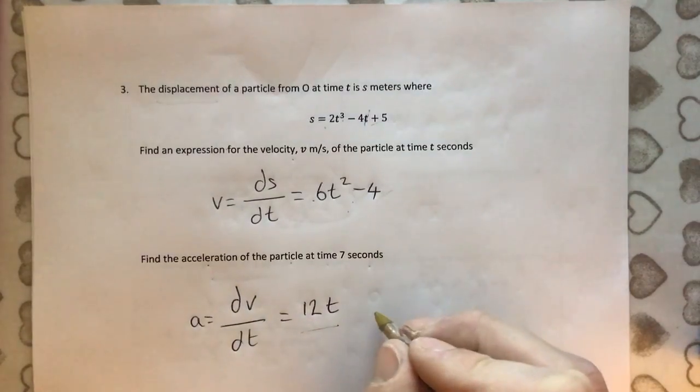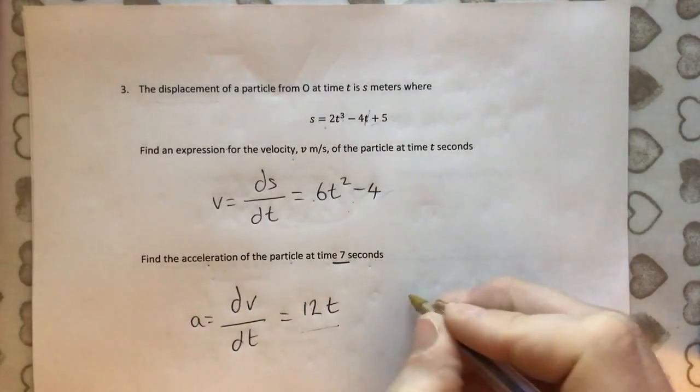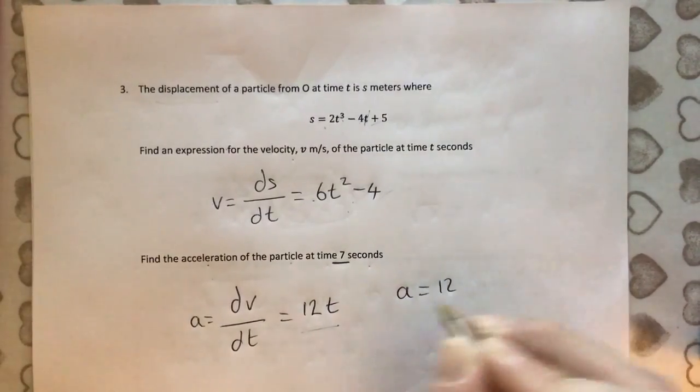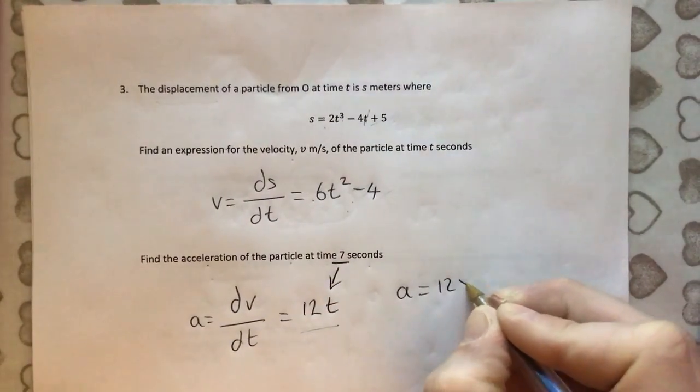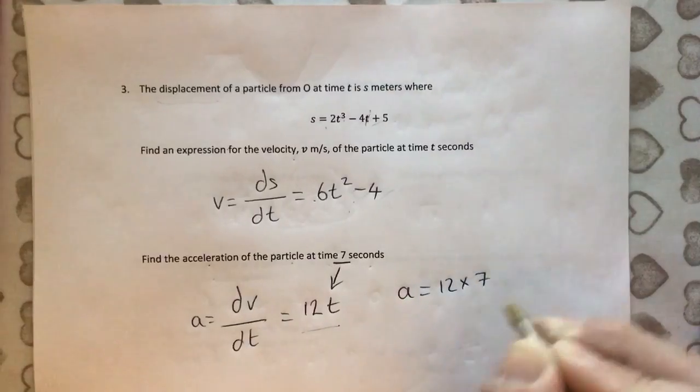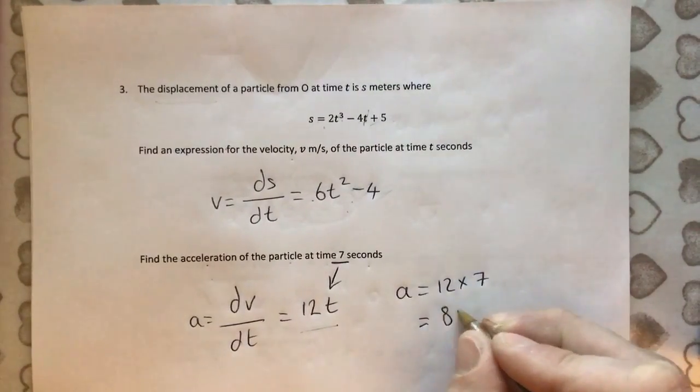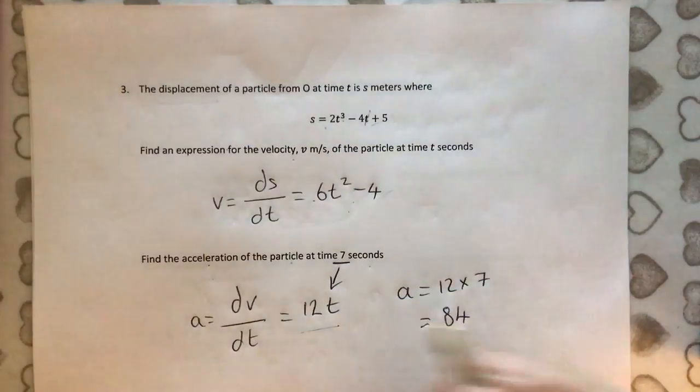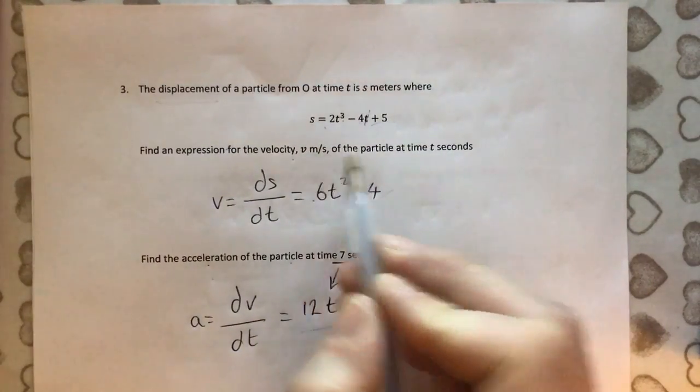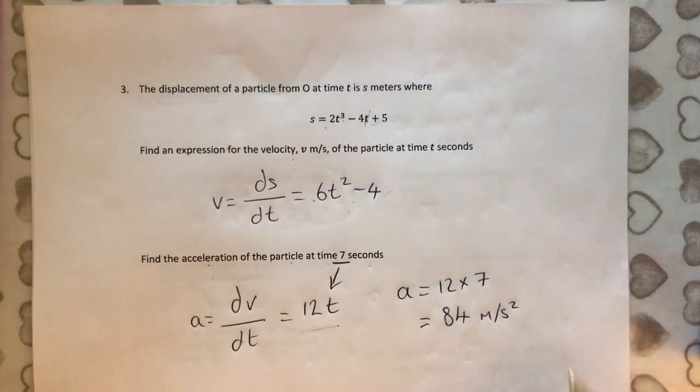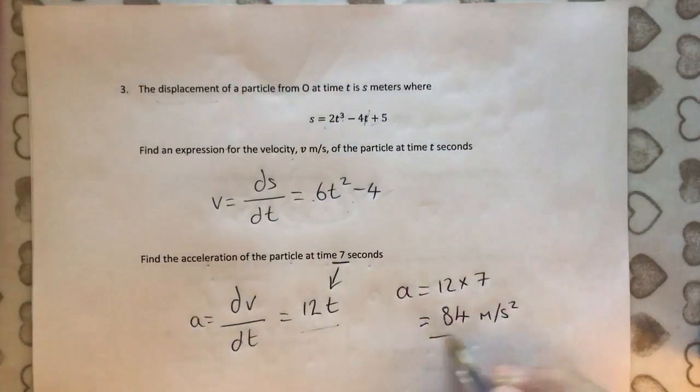And then the acceleration, when it's at 7 seconds, is just going to be, substitute that in. So it's just 12 times 7. So what did we get there? 12 times 7, 84. Is that right? No, we've probably got to put some... It said metres per second here, so this must be metres per second squared. We've got to put our units on, I suppose. And that's our answer.